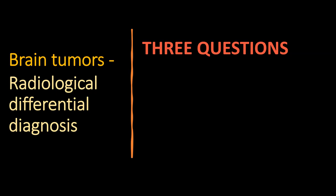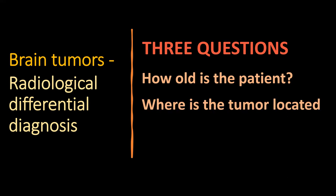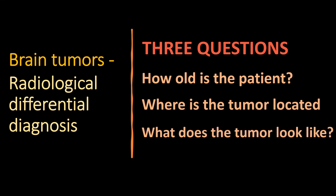When confronted with a brain tumor on imaging, you should always ask yourself three questions. The first question is how old is the patient, because the kind of brain tumors you encounter in children is totally different compared to adults. Where is the tumor located? Brain tumors tend to have a very specific differential diagnosis based on location, which explains why I am focusing on posterior fossa tumors. And lastly, what does the tumor look like on imaging? If you answer these three questions, you will arrive at a reliable diagnosis or differential diagnosis.